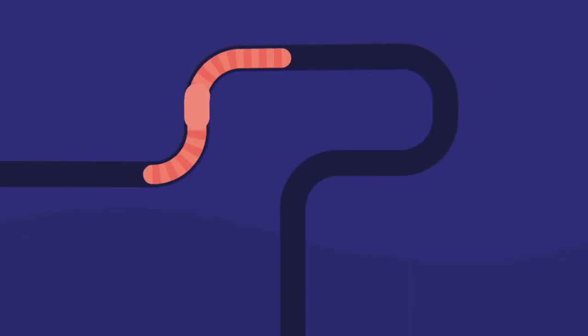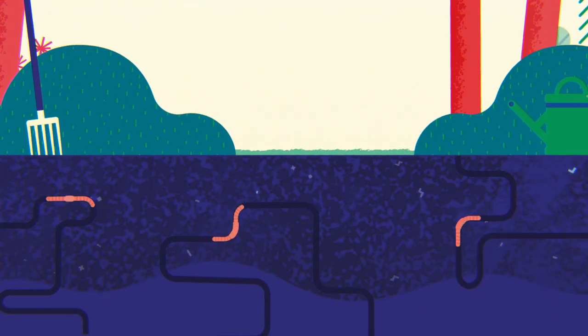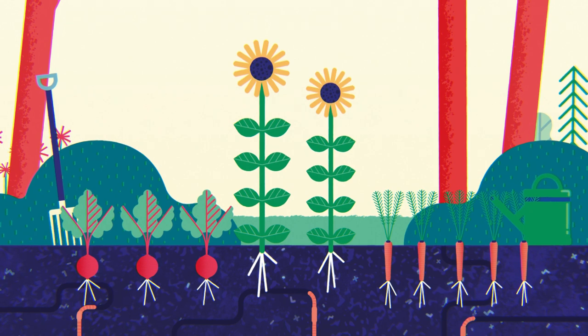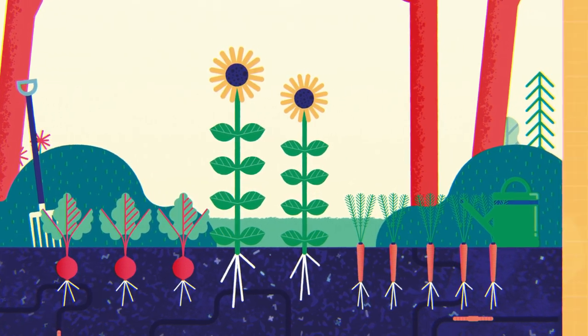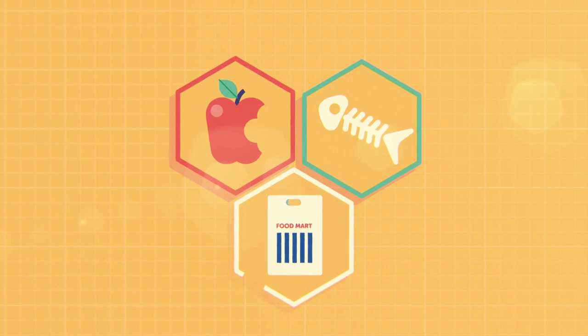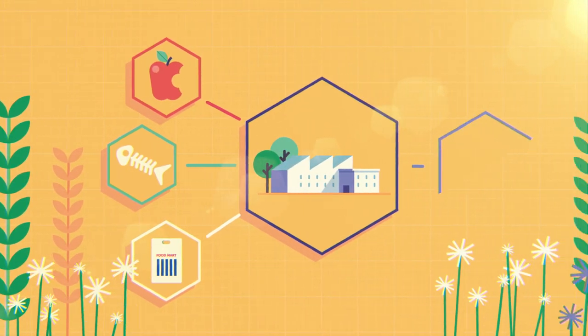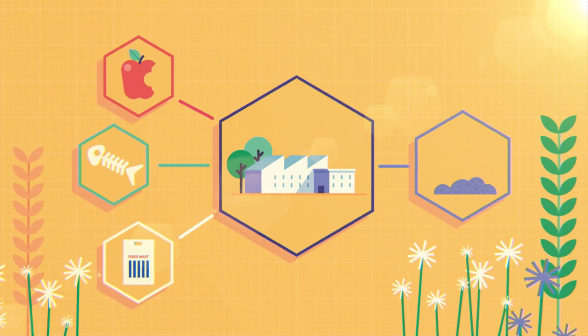Compost is a product which enriches soil as a plant fertilizer, captures carbon, plus helps retain water for plant growth and reduce flooding. Commercial composting is a natural process accelerated in specially designed and operated facilities where experts produce high quality compost.